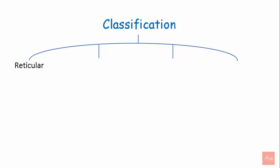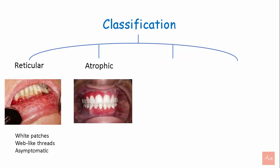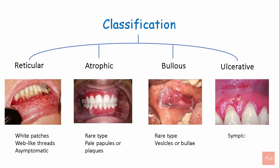Classification: Reticular lichen planus exhibits white patches and web-like threads and is asymptomatic. Atrophic lichen planus is a rare type where pale papules or plaques may be seen. Bullous lichen planus is also a rare type where vesicles or bullae are seen. Ulcerative or erosive lichen planus presents with ulcers which can be symptomatic.